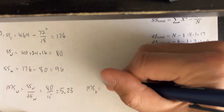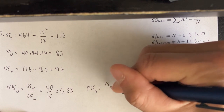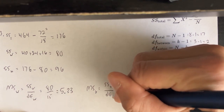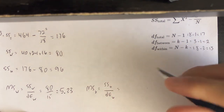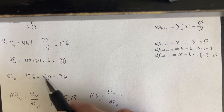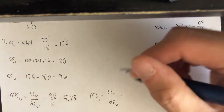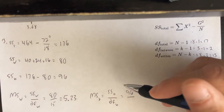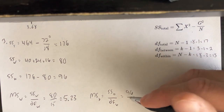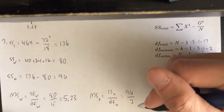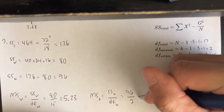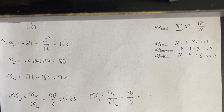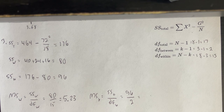MS between equals SS between over df between, which is 96 divided by 2, giving us MS between equals 48.